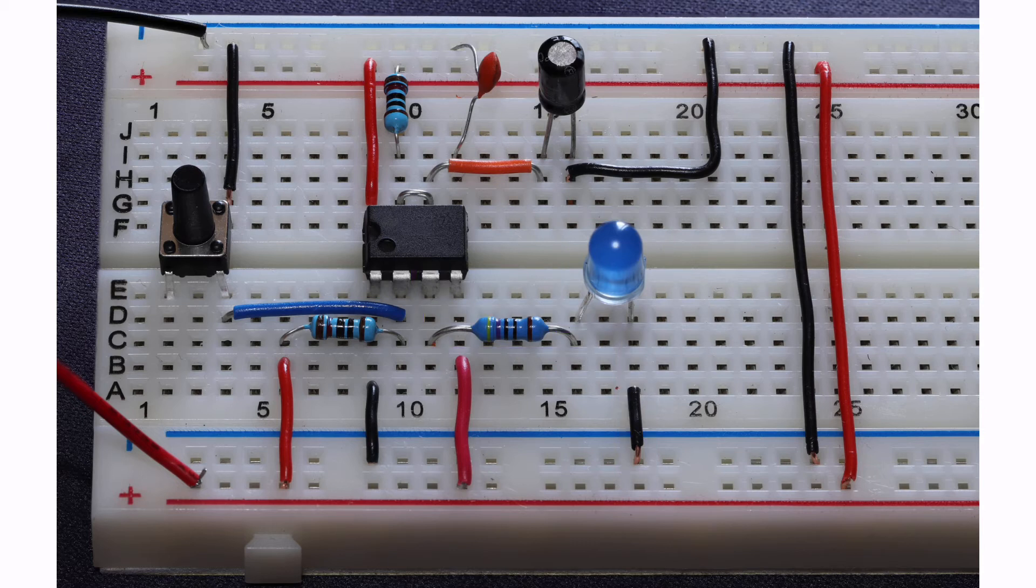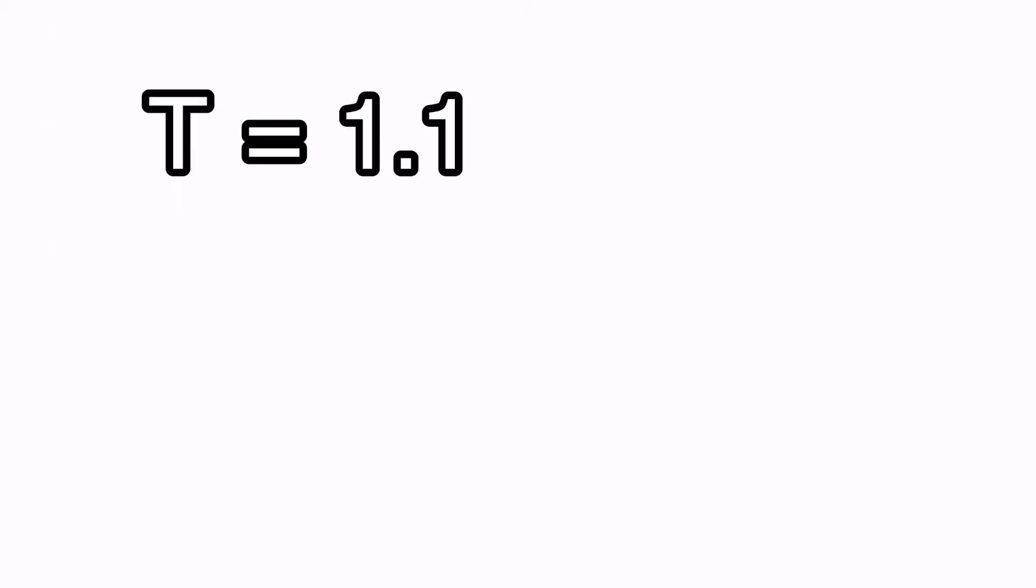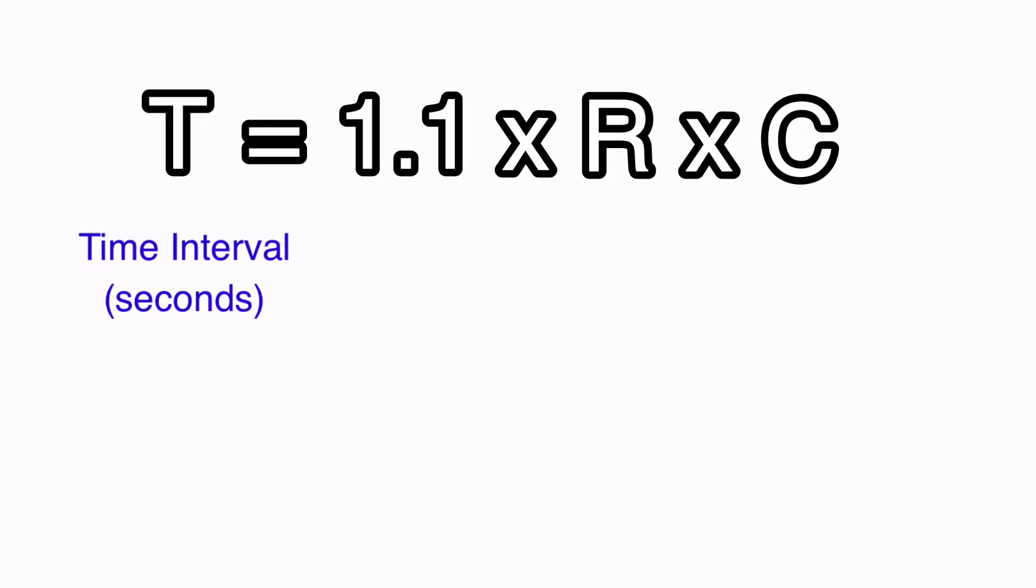We can use a basic formula to determine the duration, which is T equals 1.1 times R times C. T is the time interval in seconds that we want to determine.